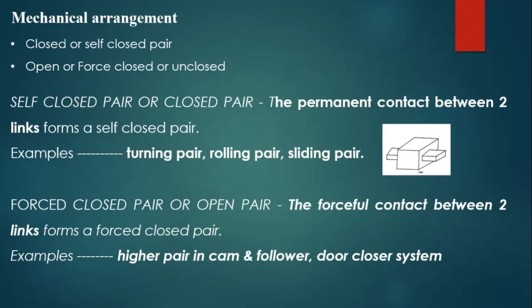The last category is mechanical arrangement, again divided into two: one is closed or self-closed pair, and the other is open or force-closed pair. The self-closed pair means there is permanent contact between two links. All turning pairs and rolling pairs are self-closed pairs. For the forced-closed pair, forceful contact between two links forms a forced-closed pair, and all higher pairs are composed of this type.